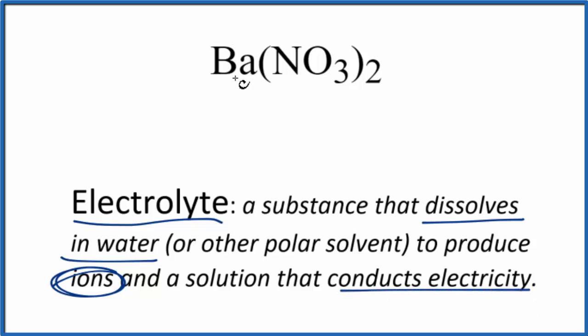So barium nitrate, we have a metal here, and then we have a group of nonmetals, the polyatomic ion. So this is an ionic compound. The question is whether it's soluble in water, whether it dissociates into its ions.